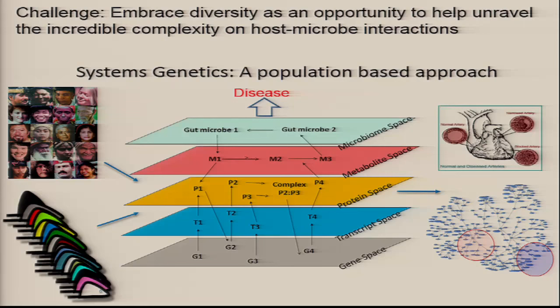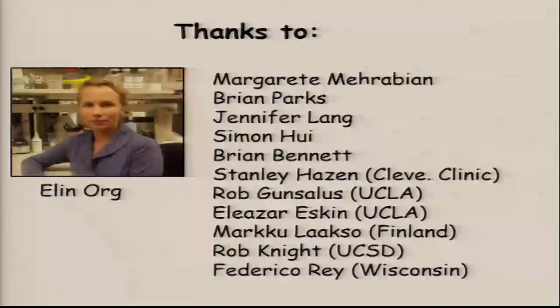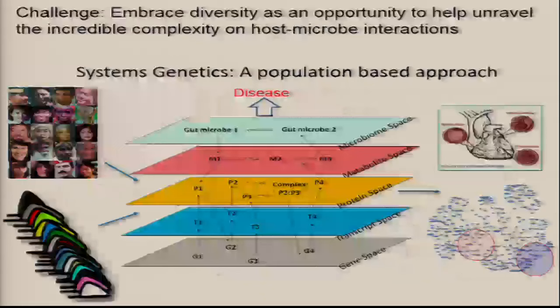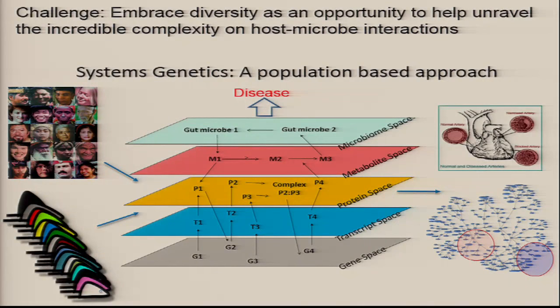We call our approach systems genetics. We look at human populations and mouse populations — both, to identify similarities and differences. We look not only at disease phenotypes or gut microbiota composition, but also at molecular phenotypes using high-throughput technologies like transcriptomics, proteomics, and metabolomics. The idea is to understand the flow of information from the genome all the way up to the gut microbiome to disease, or from the gut microbiome down to clinical traits. We do this using three kinds of approaches: correlation, genetic mapping, and statistical modeling.